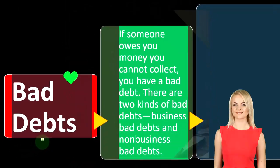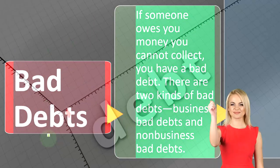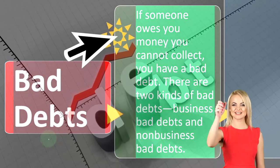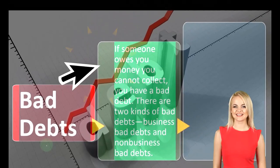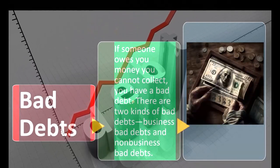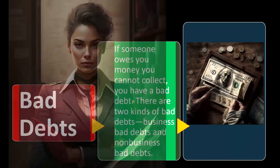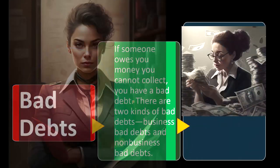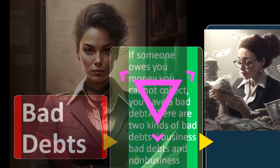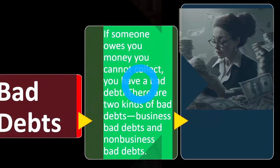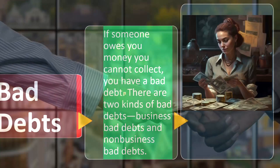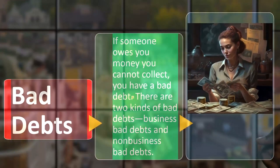We're focused now on bad debts. If someone owes you money and you cannot collect, you have a bad debt. We're talking specifically about bad debt on the business side of things. Typically, that would be a scenario where possibly you did work for someone on account, they owed you money, and then at some future point you've determined you're not going to get paid. Now you've got a bad debt situation.